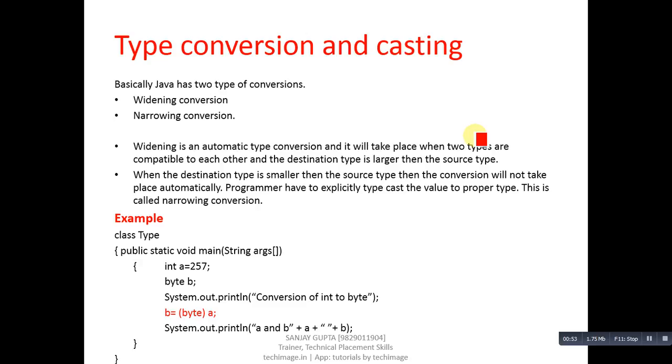At the left hand side of the equals operator, the variable will be having a larger data type, and on the right hand side of the equals operator, the variable will be having a smaller data type. So we can easily assign the value of a smaller data type into a larger data type. Widening takes place automatically.